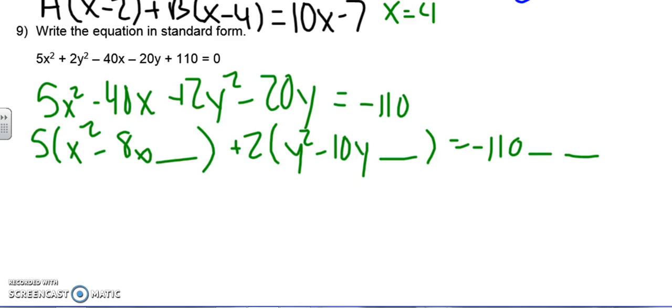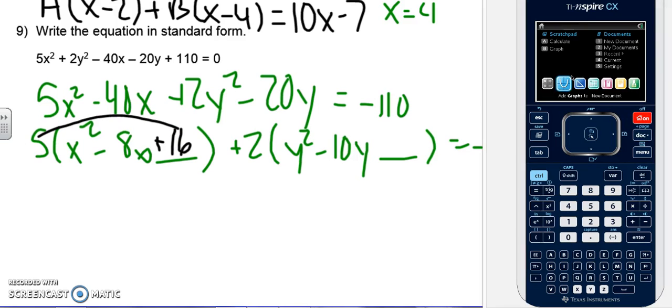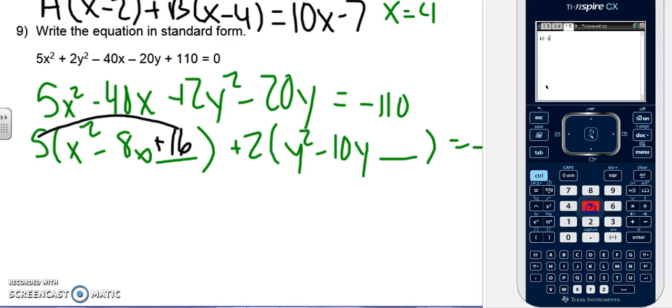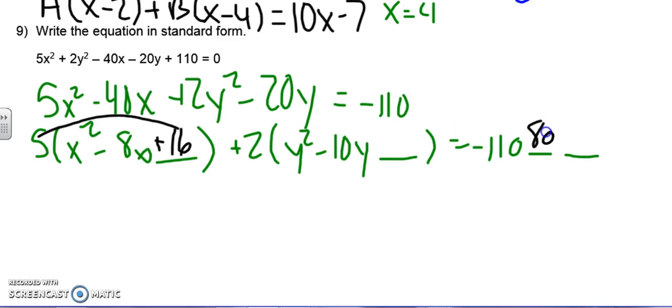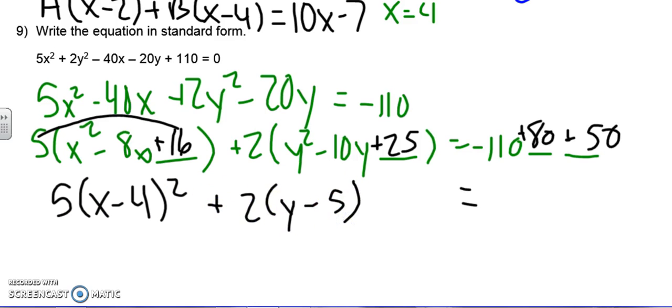I'm going to take out a 2. 2y squared minus 10y space equals negative 110 space space. All right, so divide by 2 and square it. I get 4 squared, which is 16. But what am I adding to the other side? 16 times 5. So 16 times 5, 80. All right, over here, divide by 2 and square it. I should get 25. 25 times 2 is 50. So now we're going to keep the 5. x minus 4 squared plus 2y minus 5 squared equals, looks like 40.